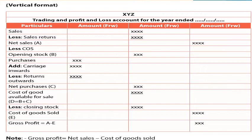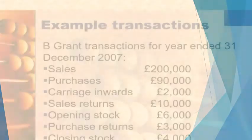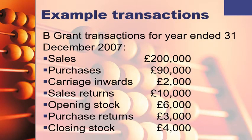In the exam, the examiner might ask you to use any of the formats, or it may not be specified and it is up to you which format to use. Let's look at this example: Big Grant, transactions for the year ended 31 December 2007. Sales: 200,000; purchases: 90,000; carriage inwards: 2,000; sales returns: 10,000; opening stock: 6,000; purchases returns: 3,000; closing stock: 2,000 — all in pounds.